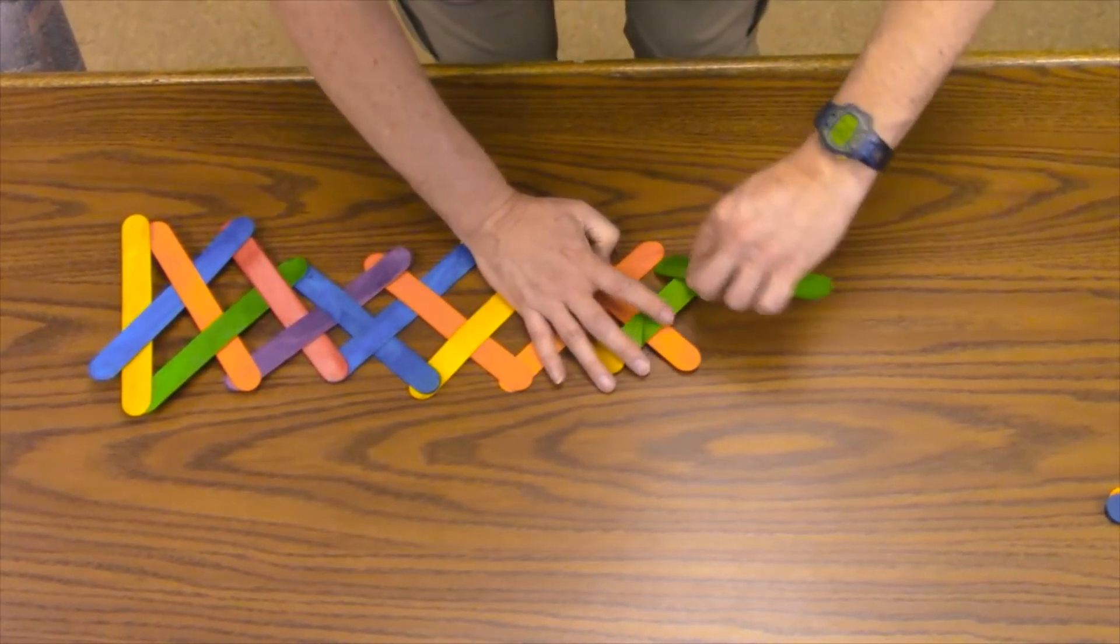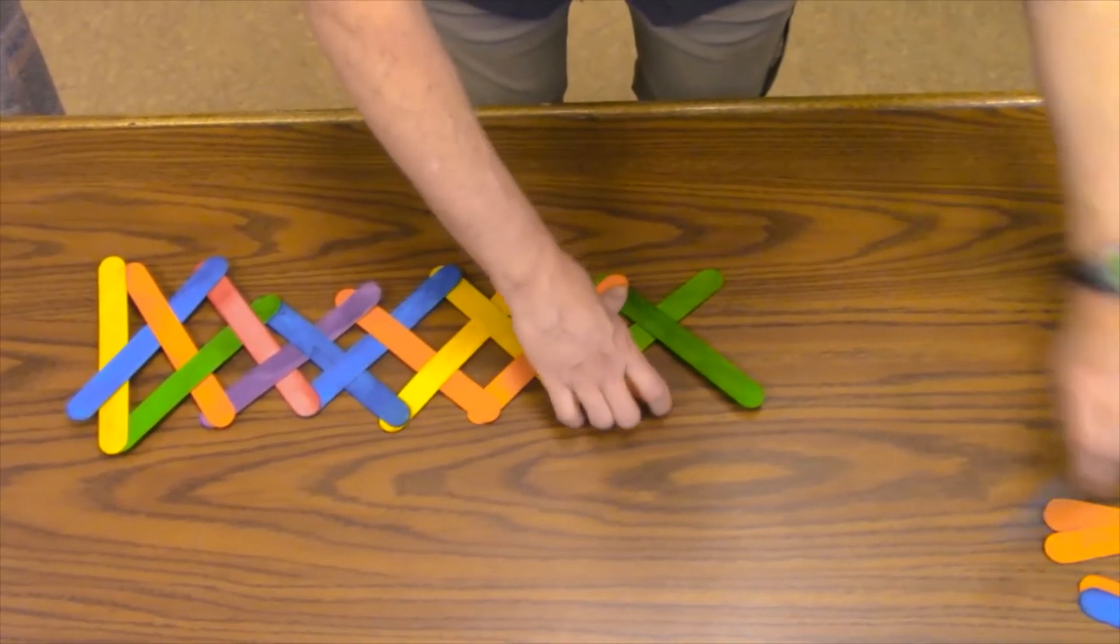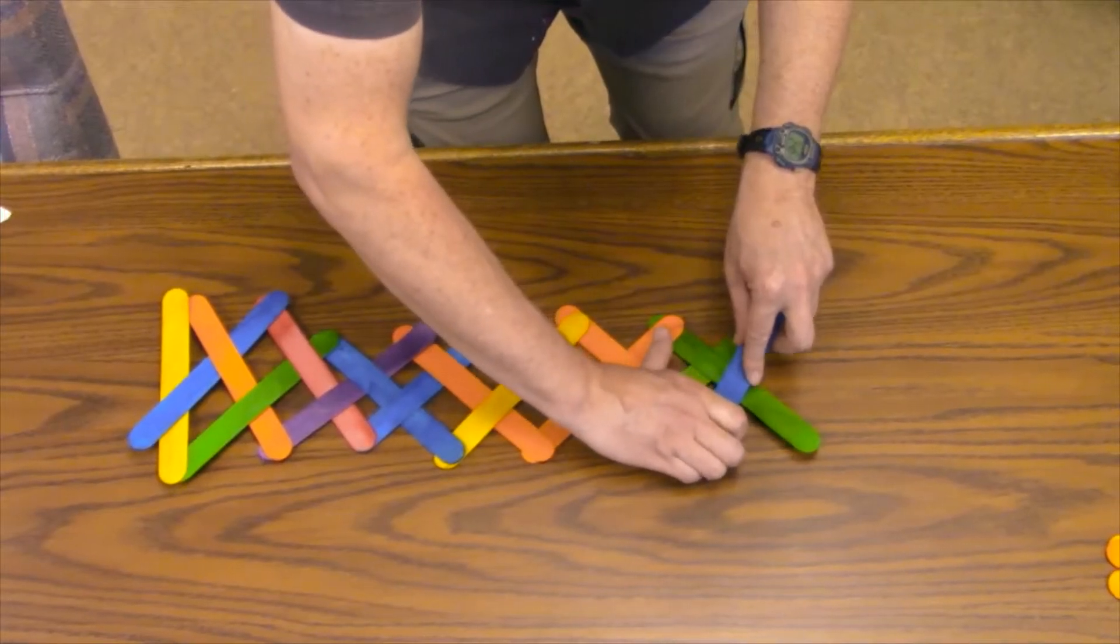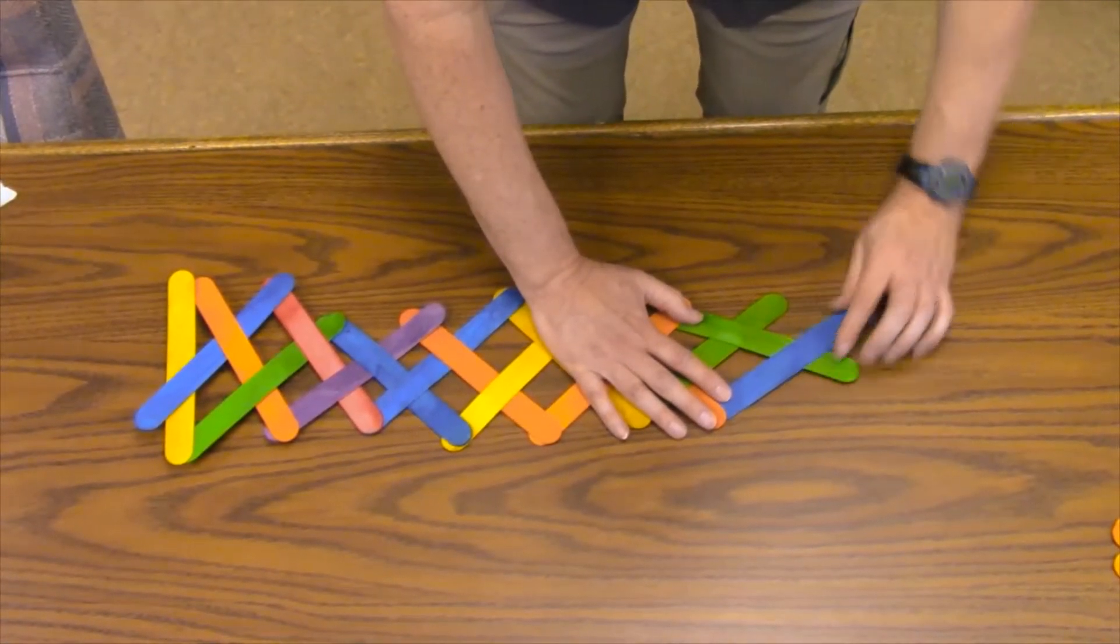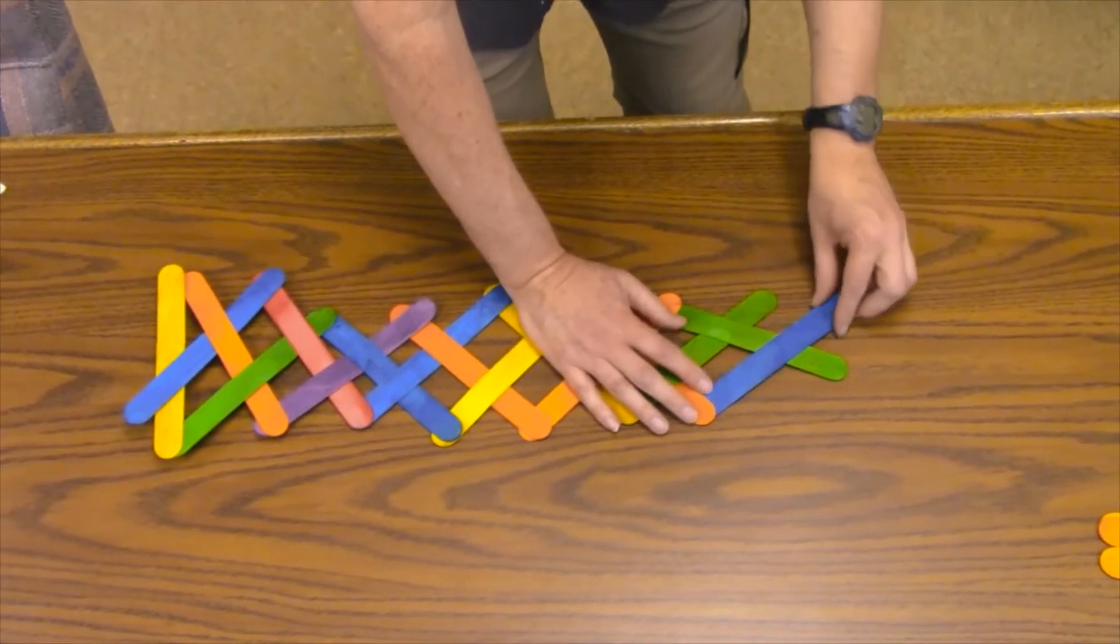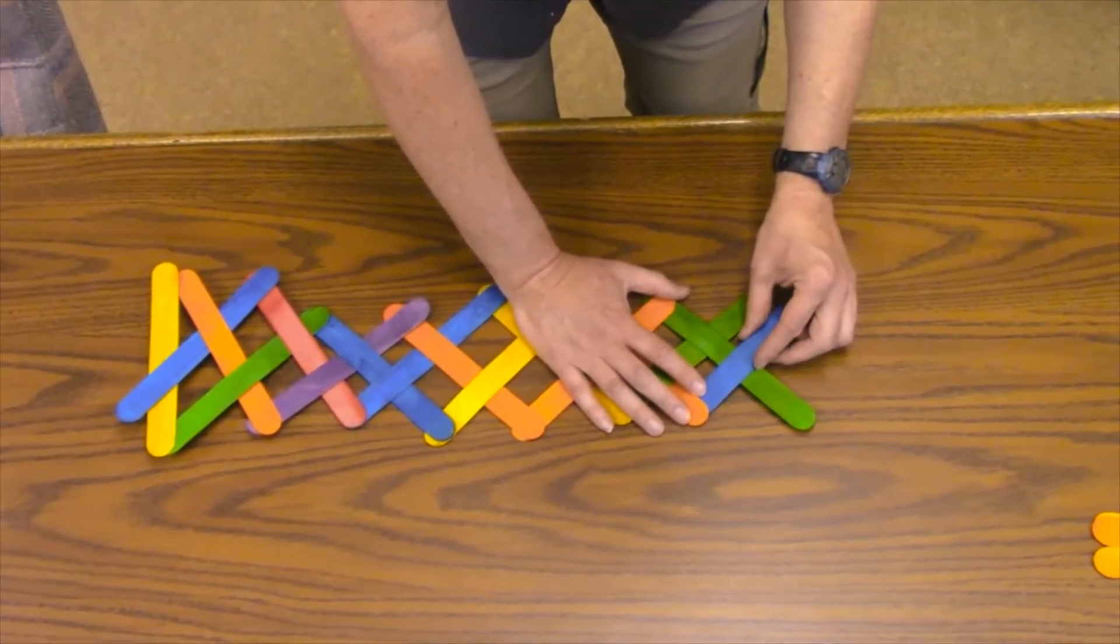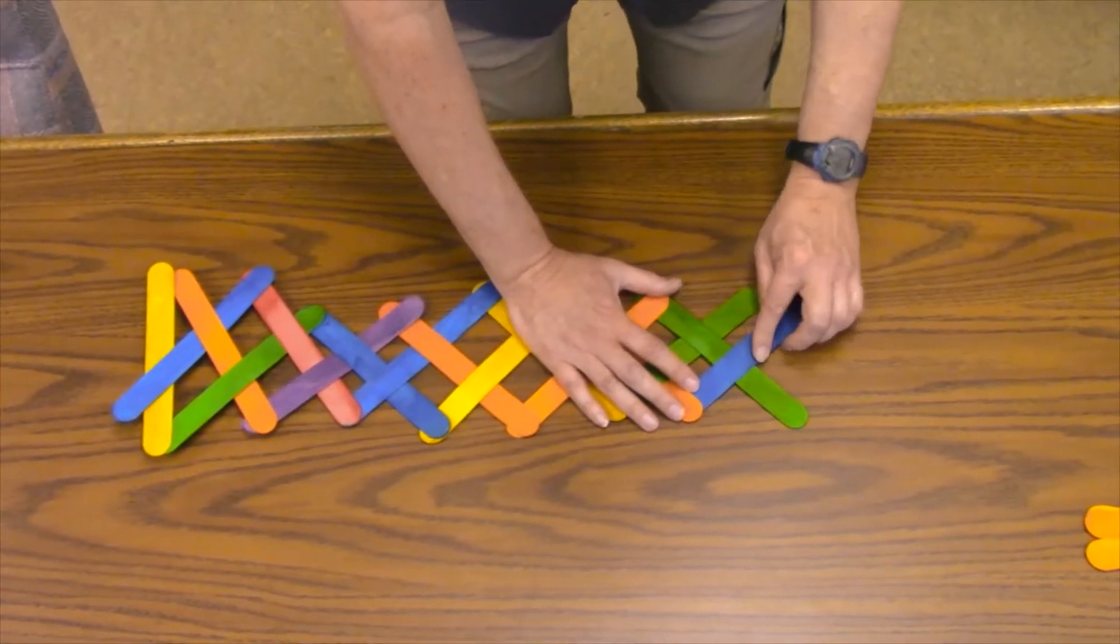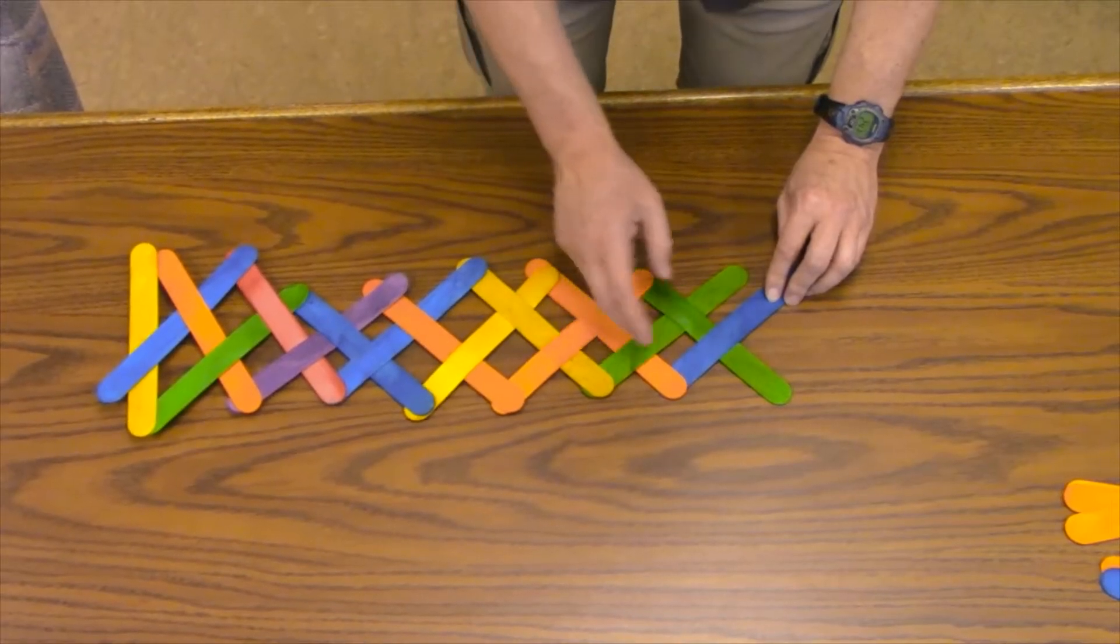It's very easy as you're starting this weave to have the sticks start to increase the angle. So they start to do this, and that's simply, you'll eventually run out of stick to overlap. So it's always good to be mindful that the sticks are always parallel to each other.